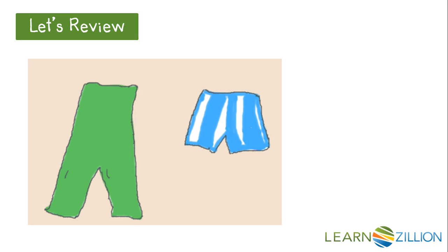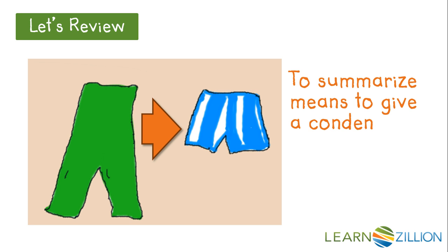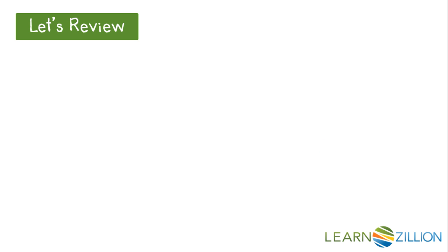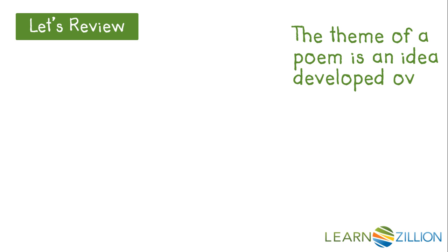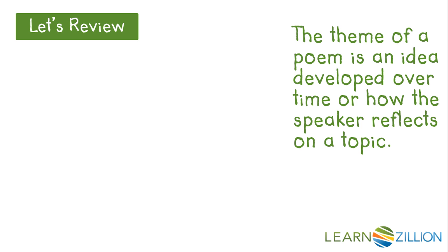Let's review. When we summarize, we don't include everything the poet says. Instead, we drill it down to the most important information. In other words, we sum it up in a condensed or shorter version. The theme of a poem is an idea developed over time. It's how the speaker reflects on a topic.